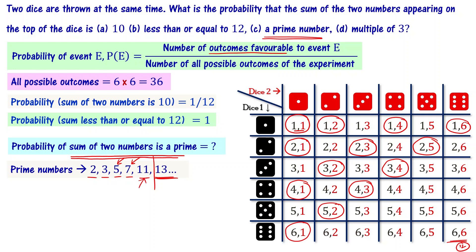Counting all the circled outcomes for prime sums: 1, 2, 3, 4, 5, 6, 7, 8, 9, 10, 11, 12, 13, 14, 15 — so the number of favorable outcomes is 15. Therefore the probability that the sum is a prime number is 15/36, which simplifies to 5/12.